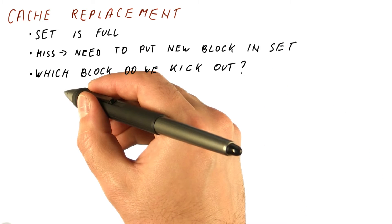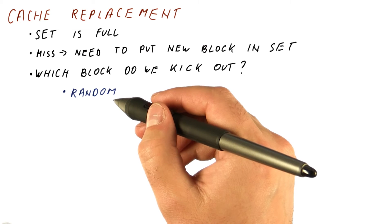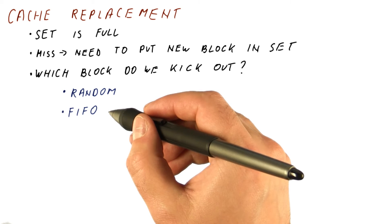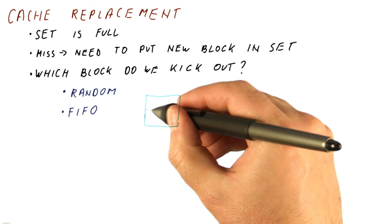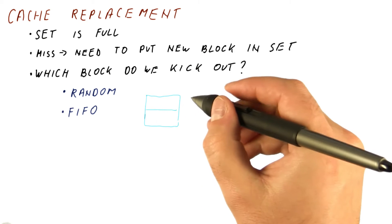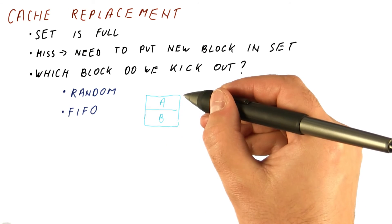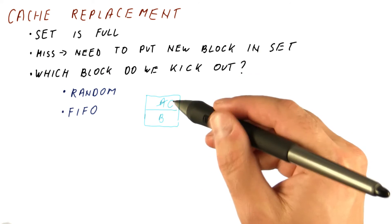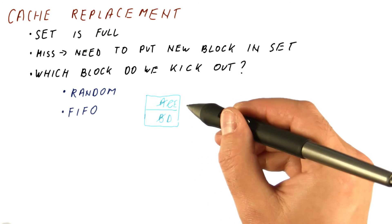Possible replacement policies are: random — just pick a block randomly from those already in the set. FIFO kicks out the block that has been there the longest. For example, with two blocks: we bring in A, then B. When we want to bring in C, we kick out A because it's been there the longest, then we kick out B to bring in D, and so on.